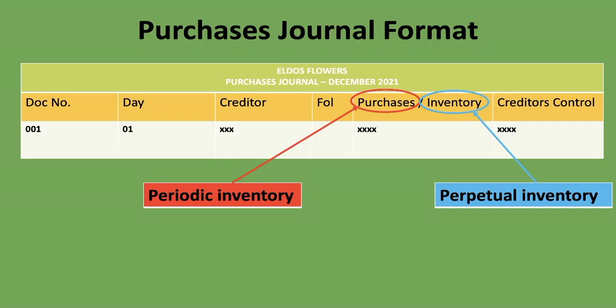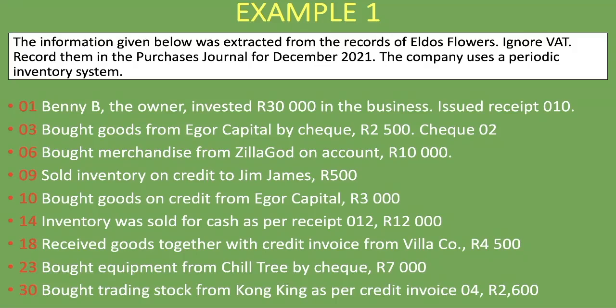Let's go through an example. We are told that the information given below was extracted from the records of Aldo's Flowers — ignore VAT and record them in the purchases journal for December 2021. The company uses a periodic inventory system, so we'll use 'Purchases' in that column, not 'Inventory'.